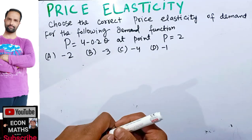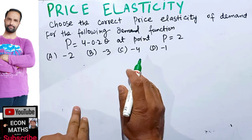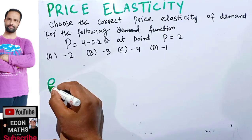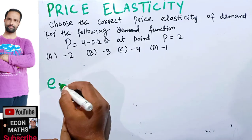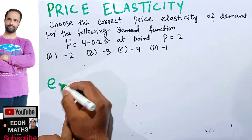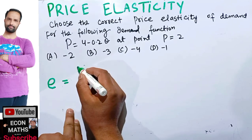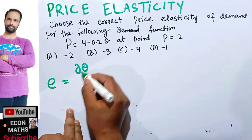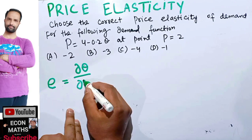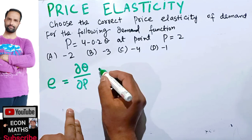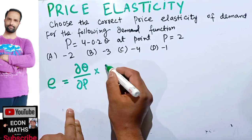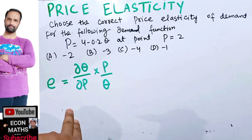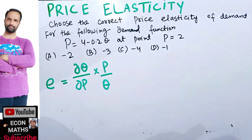How do we calculate price elasticity of demand? The formula is simple. Let us denote e as the price elasticity of demand. It is given by dq upon dp, multiplied by p upon q.